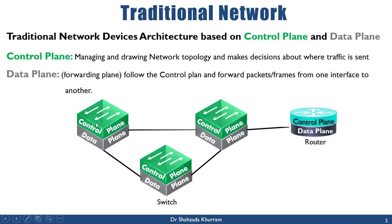We can say the control plane works like a brain of each device. The data plane - also called the forwarding plane - executes the control plane's actions and instructions, forwarding packets and frames from one interface to another. The data plane simply follows the structure of the control plane.